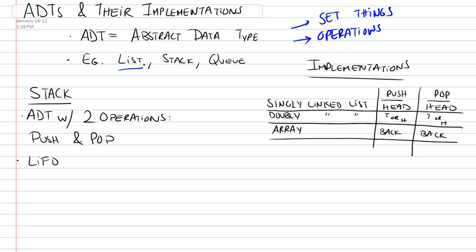For example, we have the abstract data type of a list. You define it as being a set of elements, and the operations that we could do on the list are, for example, add a new element at the start of the list, at the end of the list, at the middle of the list, and so on and so forth. Or for example, get the third element. So these are all the operations that you could do on a list.